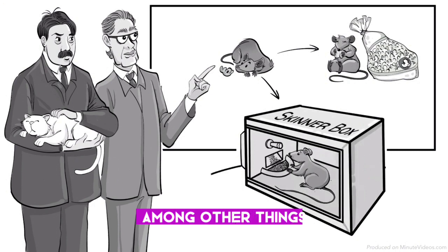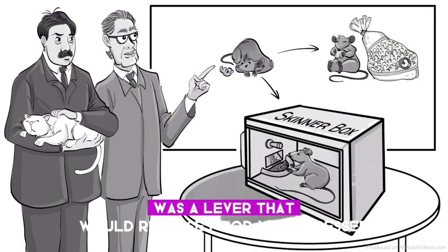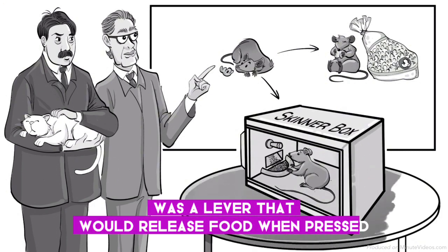Among other things, inside the box was a lever that would release food when pressed.